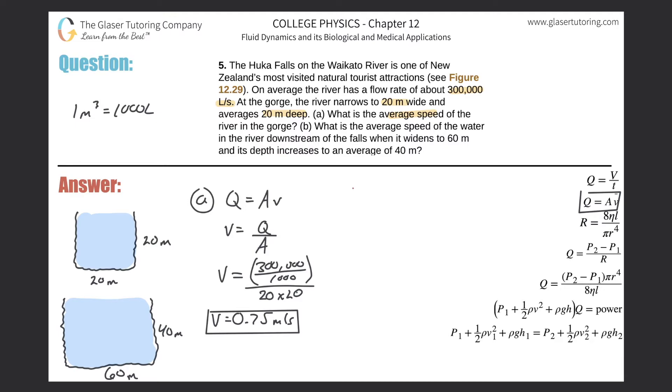That takes care of letter A. Letter B asks: What is the average speed of the water in the river downstream of the falls when it widens to 60 meters and its depth increases to an average of 40 meters? Very similar process. The flow rate is going to be the same because we assume continuity here.